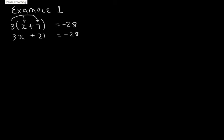Now from our rules, we remember that we want our variables on one side and we want our constants on the other side. So it's easier to take that positive 21 over to the other side to the negative 28. That leaves us with 3x = -49.